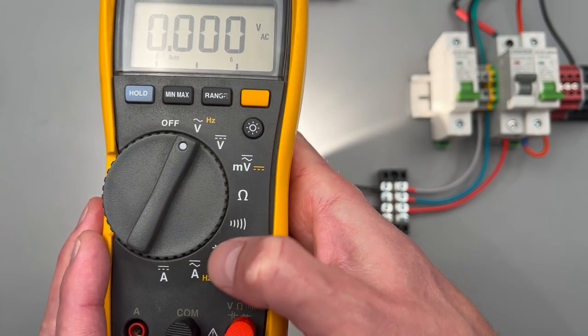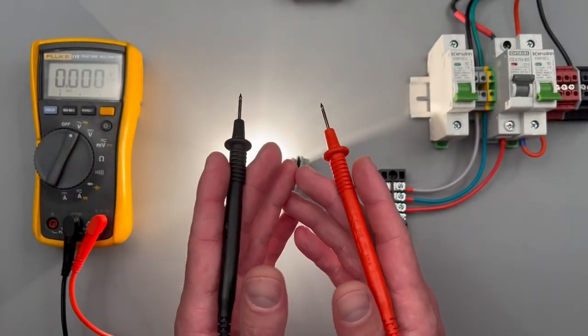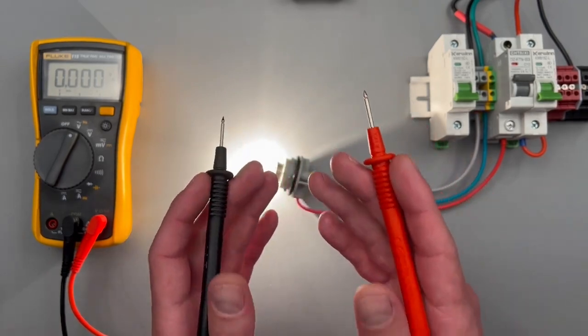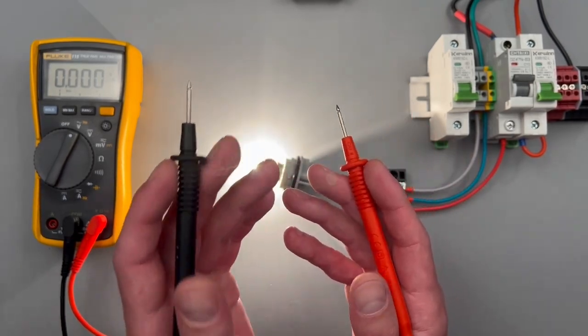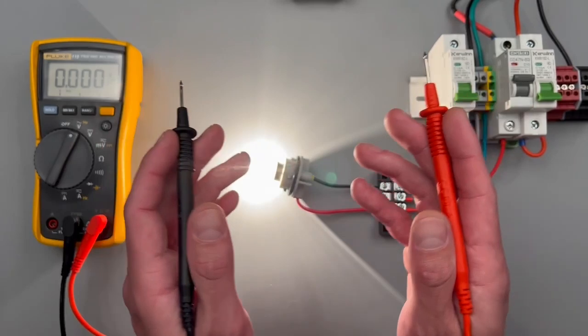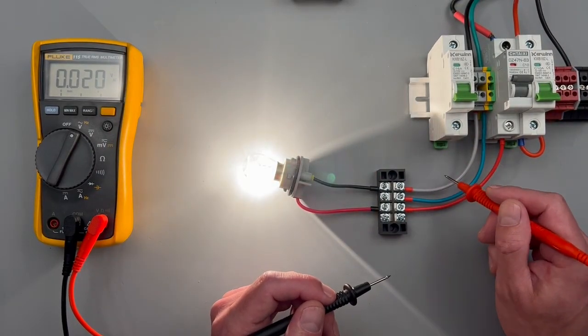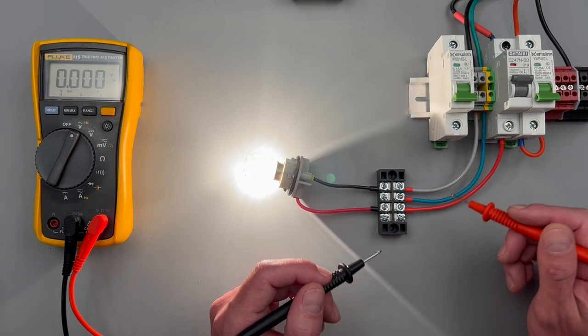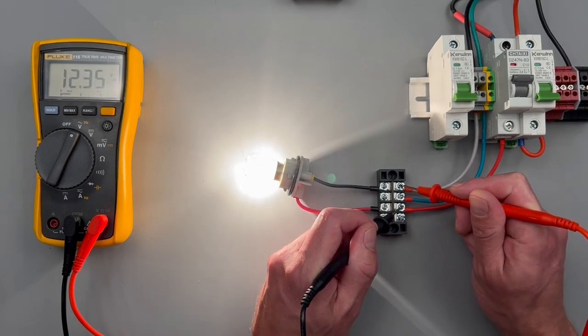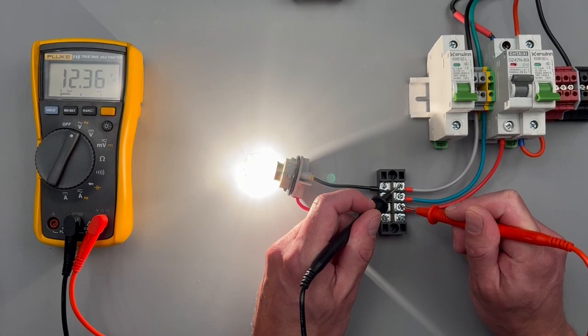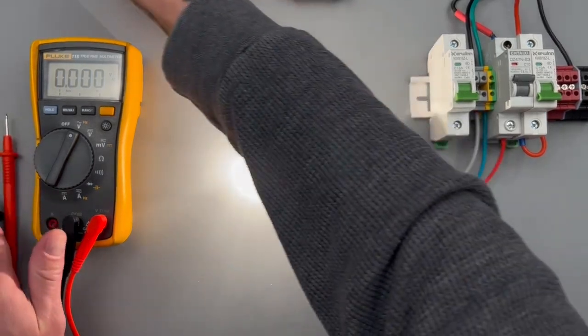With making an alternating current voltage measurement, polarity is not going to matter. What do I mean by that? I mean your black and your red lead can be in either way. This gray wire here is my neutral, this red wire here is my hot. I can make my voltage measurement in either direction and I'll still get the same voltage measurement.